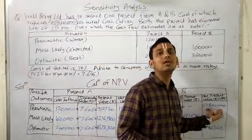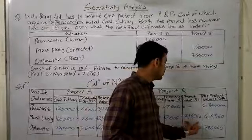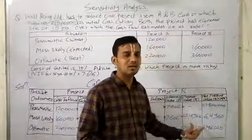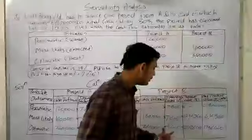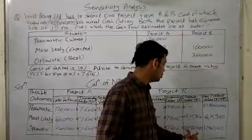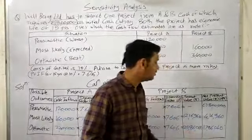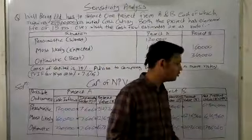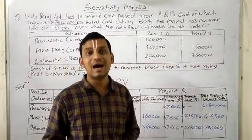In the second situation, we have present value of 12,16,960 minus 8,00,000 equals 4,16,960. In the optimistic approach, we have present value of 25,86,040 minus 8,00,000 equals 17,86,040.